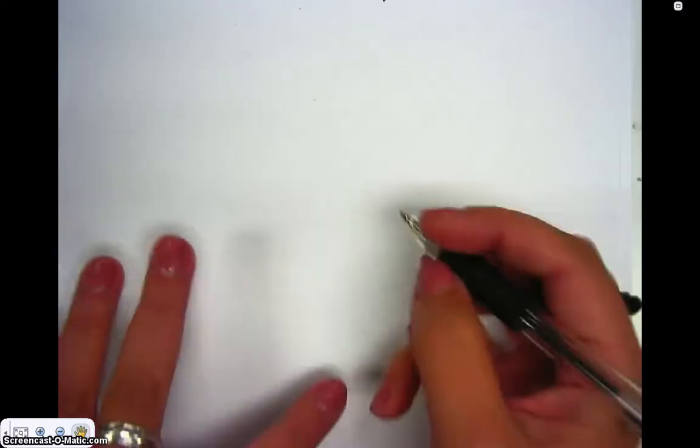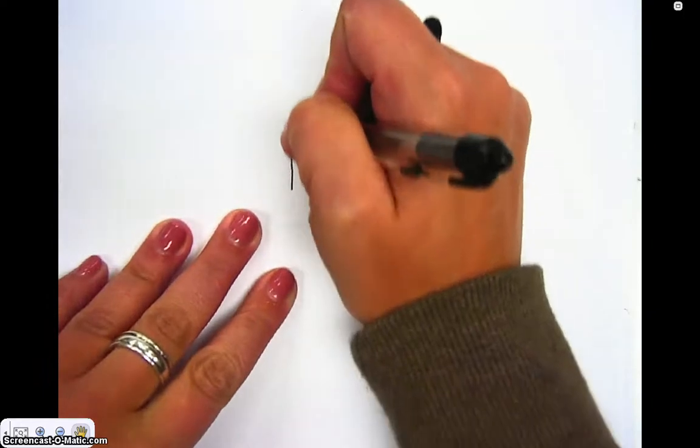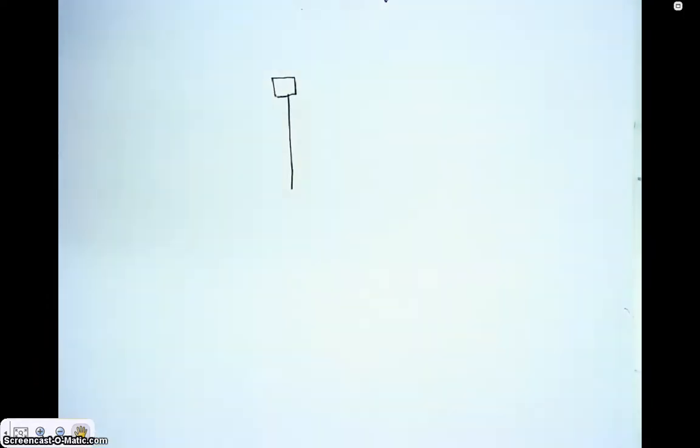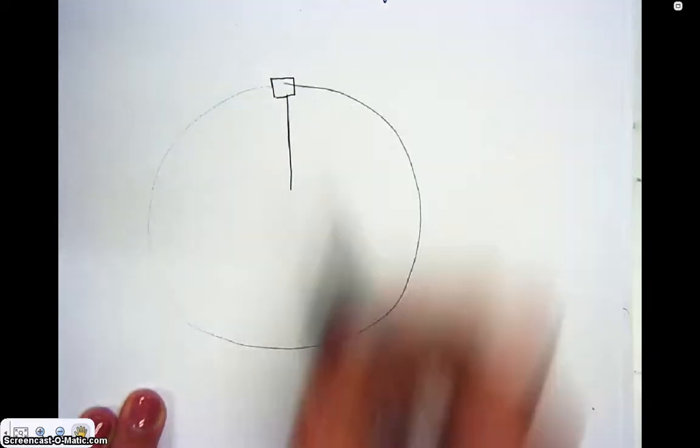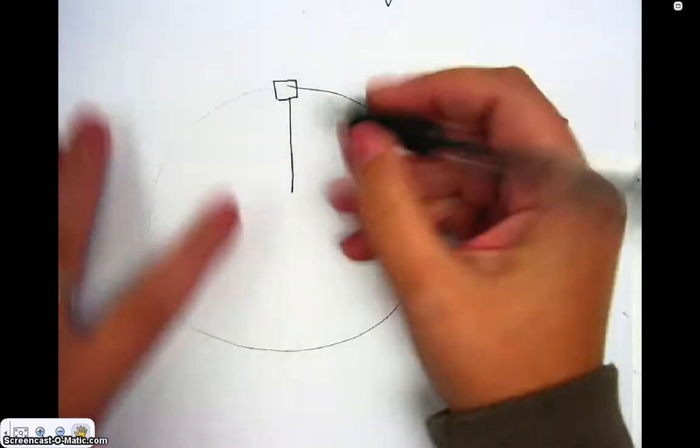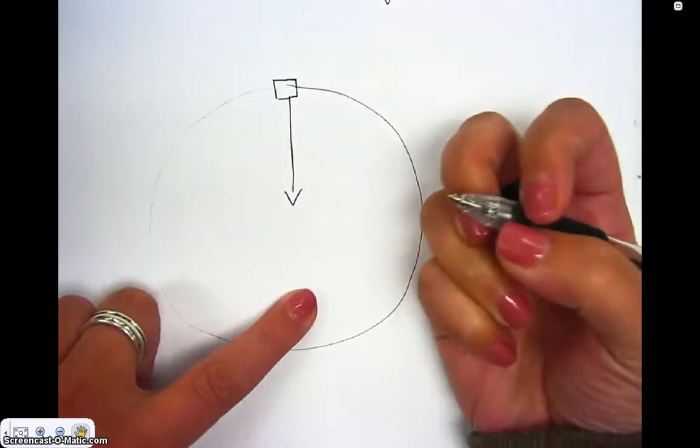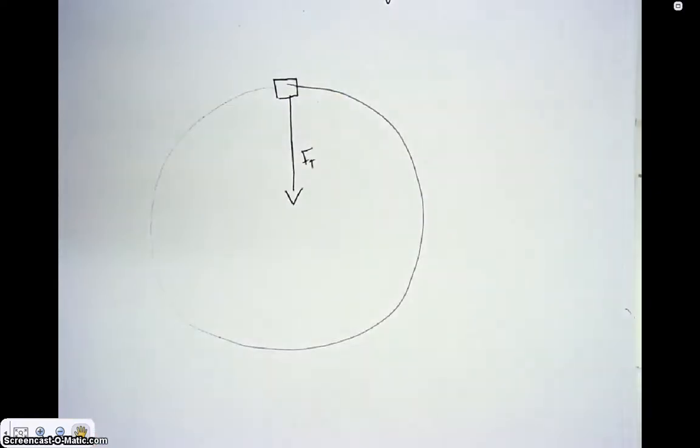Vertical circles are a little bit different. Let's say I'm spinning a stopper on a string and up here at the top, here's my stopper. We have to think about what forces are acting on this stopper in this situation. I still have my string causing a force towards the center of the circle as it travels, which is my force tension.